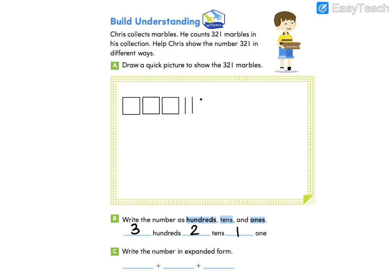Now we're going to write this in expanded form. This is what we started doing in the last module. Remember, we're going to start with our greatest place value: 300. And we're writing the value — 300 plus 21.